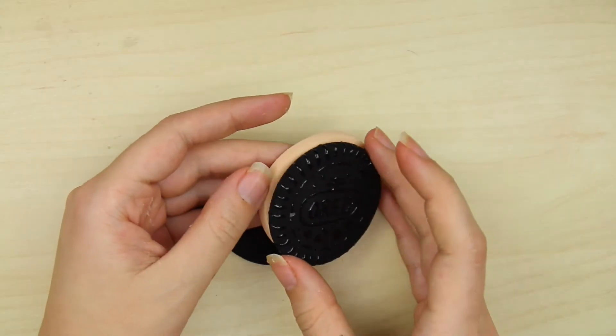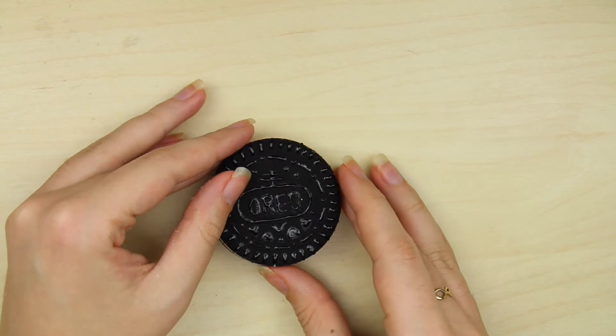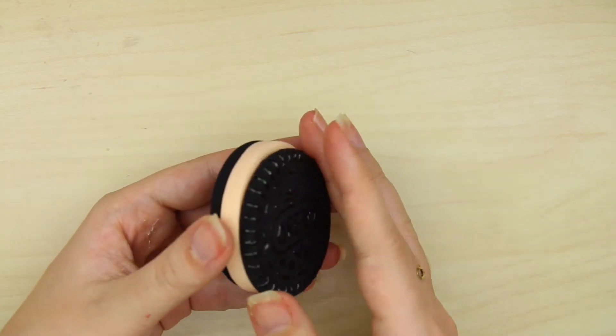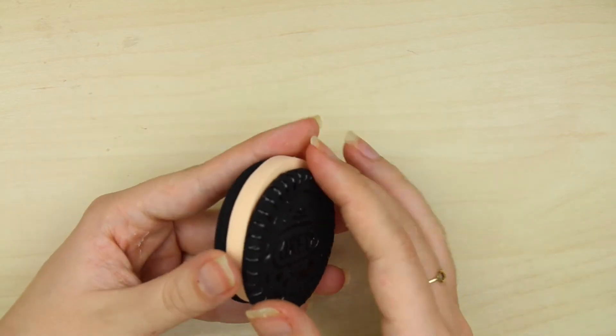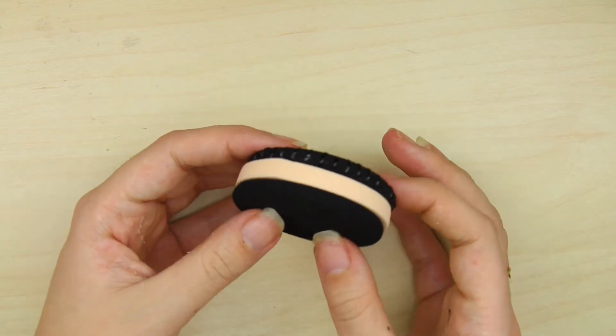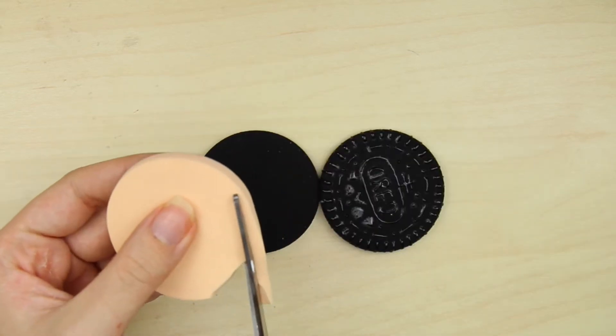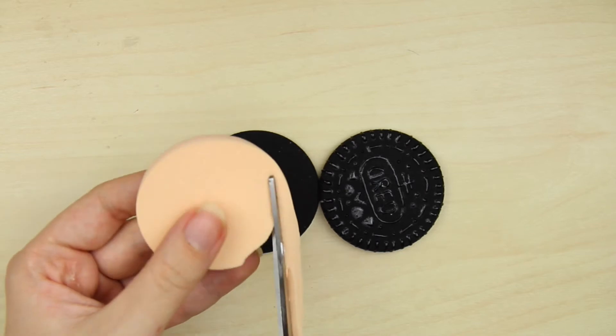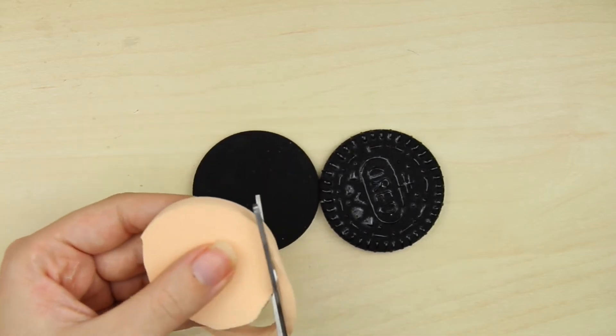For the filling, you need again a round makeup sponge. If you find a white one that fits perfectly into the middle, use that. It's so much easier. But if not, just use whatever sponge you have at home and cut it a little bit smaller than the other pieces.